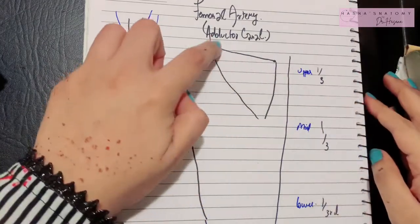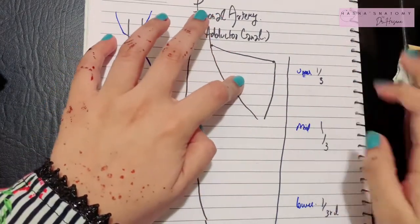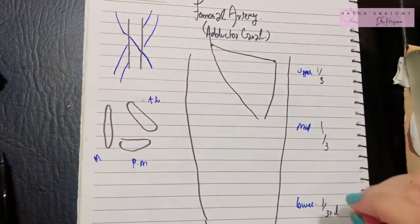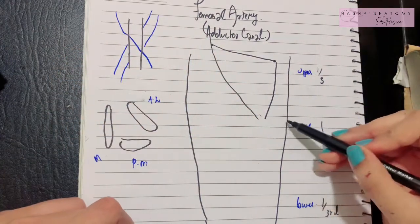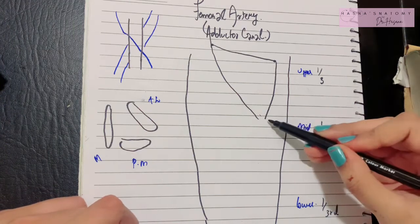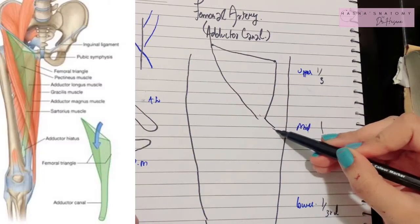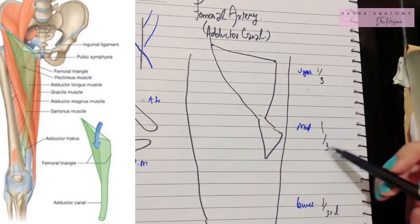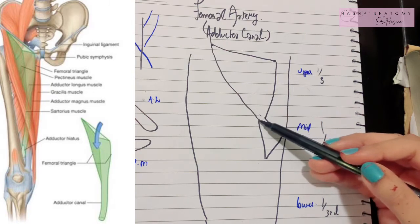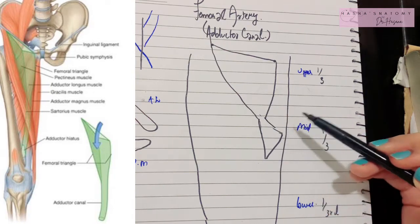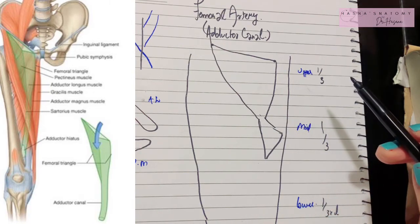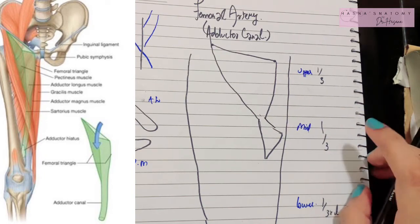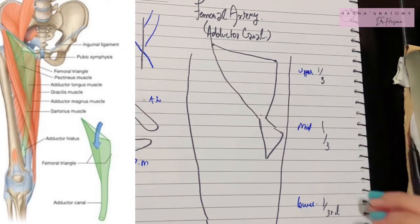In the previous video, I already mentioned that the femoral triangle was basically a triangular depression in the front of the thigh, in the upper one-third of your thigh. The apex of the femoral triangle is continuous with the adductor canal in the medial compartment, located in the middle third of your thigh.